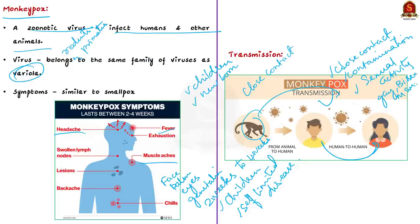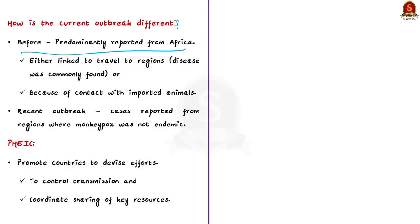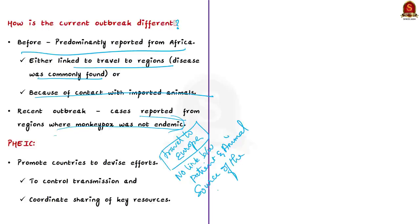How is the current outbreak different from the earlier one? Before this current outbreak, monkeypox was predominantly reported from Africa, and all cases were either linked to travel to regions where the disease was common or due to contact with imported animals. But in the recent outbreak, several cases were reported from regions where monkeypox was not endemic, and most cases had a history of travel to Europe or North America, not Africa. Unlike earlier outbreaks, there are no links between patients and infected animals, and there is limited knowledge about the source and transmission routes of the 2022 outbreak, making monkeypox a disease of global public health importance.